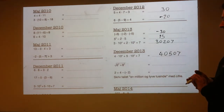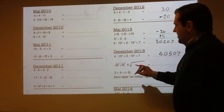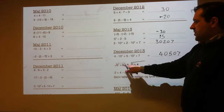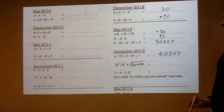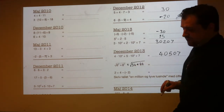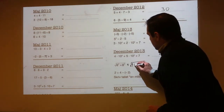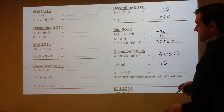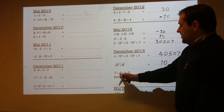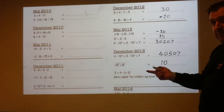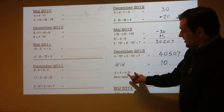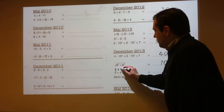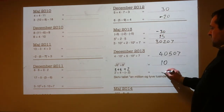A square root with some squares in it. 6 squared means 6 times 6, which is 36. 8 squared means 8 times 8, which is 64. So it's the same as the square root of 36 plus 64. 36 plus 64 is 100, so it's the square root of 100, which is 10, because 10 times 10 makes 100. Then 2 plus 4 minus minus 2: minus minus makes plus, so that's 2 plus 4 plus 2, which is 8.